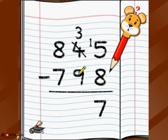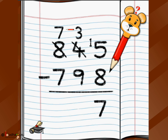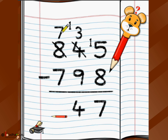Move to the tens position. Don't look at 4 — it's crossed out and is now 3. Can we do 3 minus 9? No, 9 is greater. So 3 borrows from 8: 8 becomes 7, and 3 becomes 13. So 13 minus 9 is 4. Now move to the hundreds — 7 is crossed, so use 7. So 7 minus 7 is 0. The answer to 845 minus 798 is 047, which is 47.